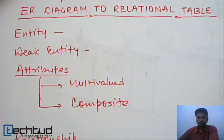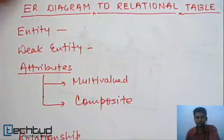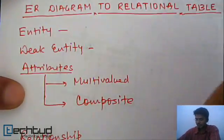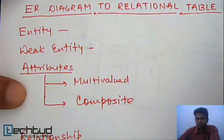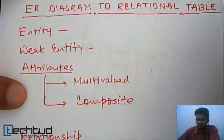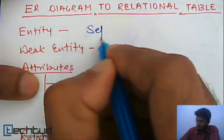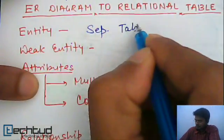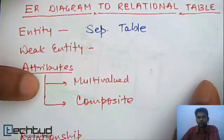I have noted down the different elements of the Entity-Relationship diagram. The first one is entity — when we say entity, we mean the strong entity. For each strong entity, we need to create a separate table.